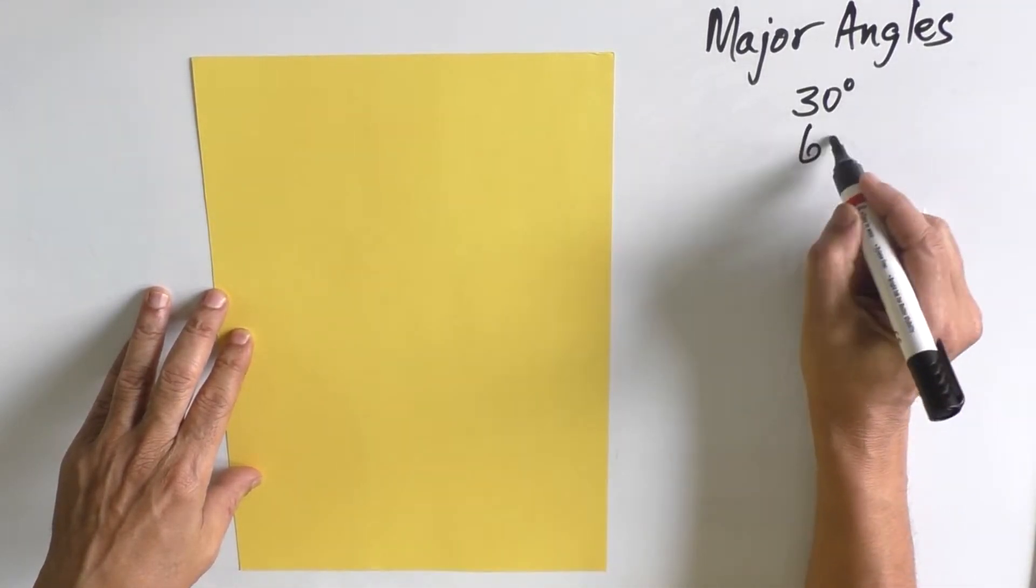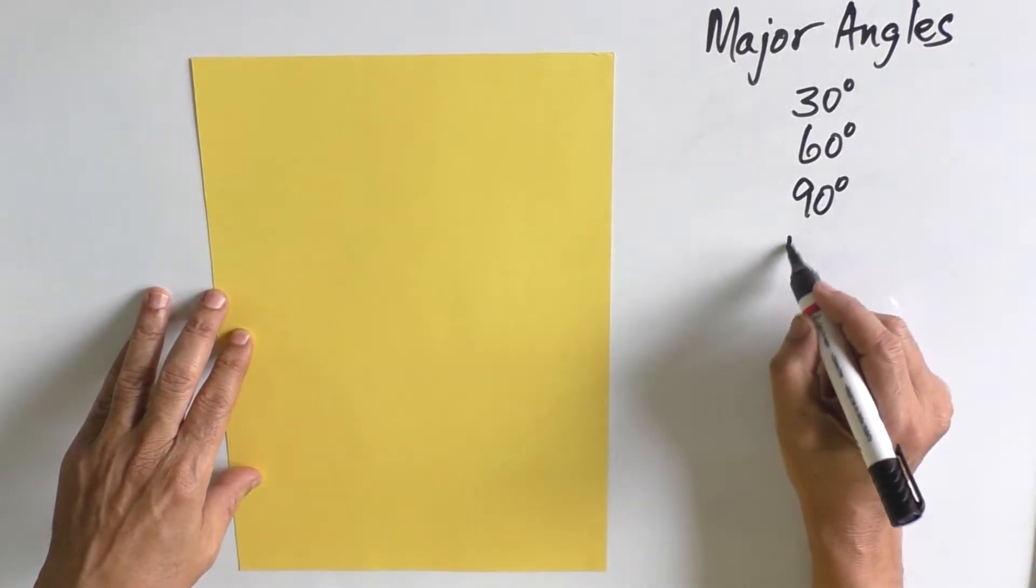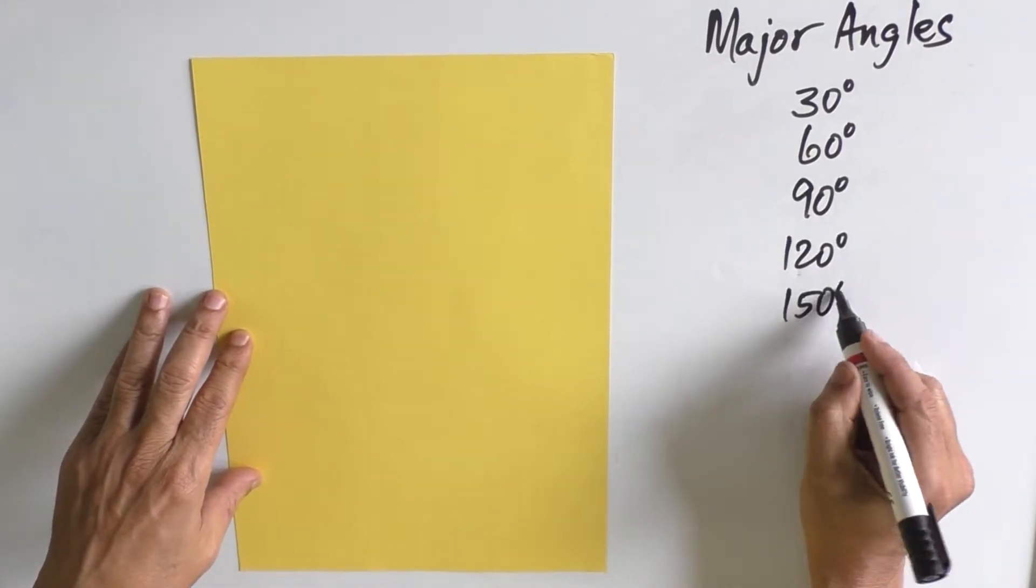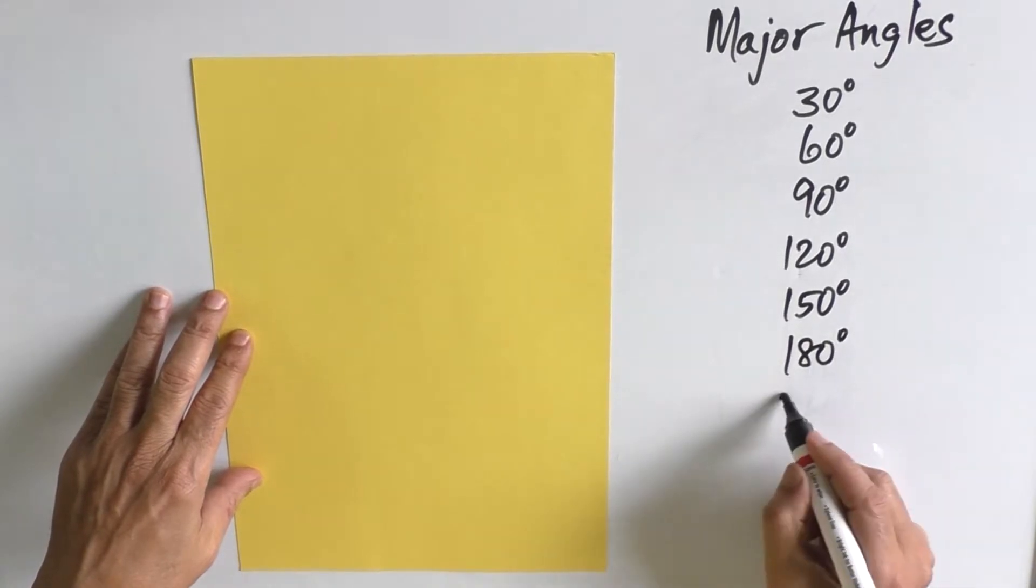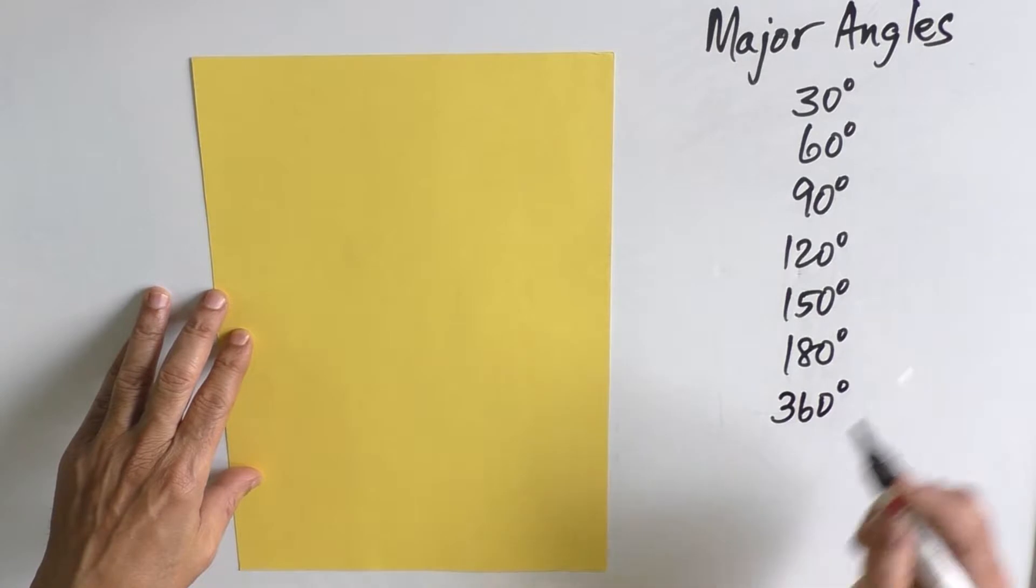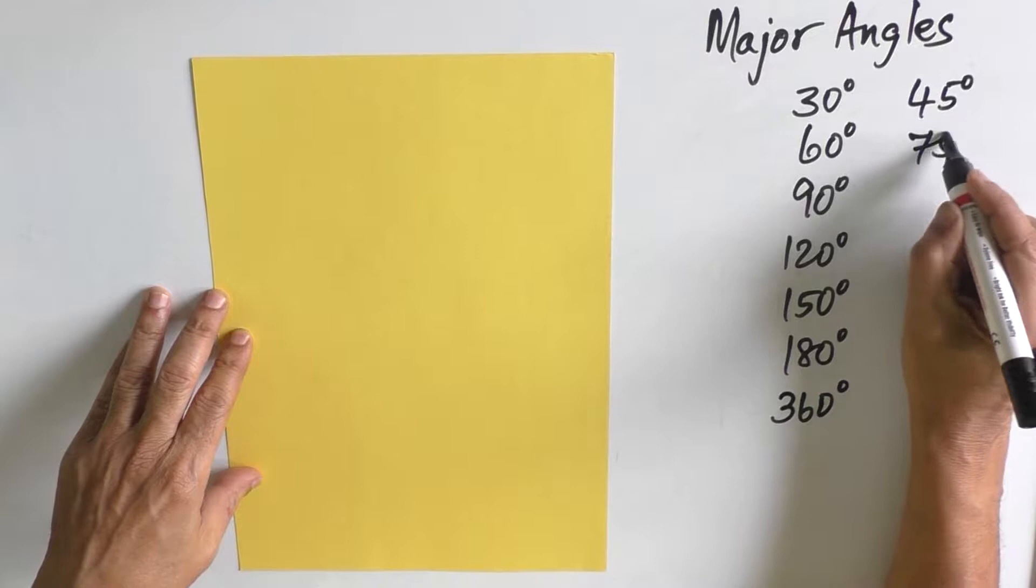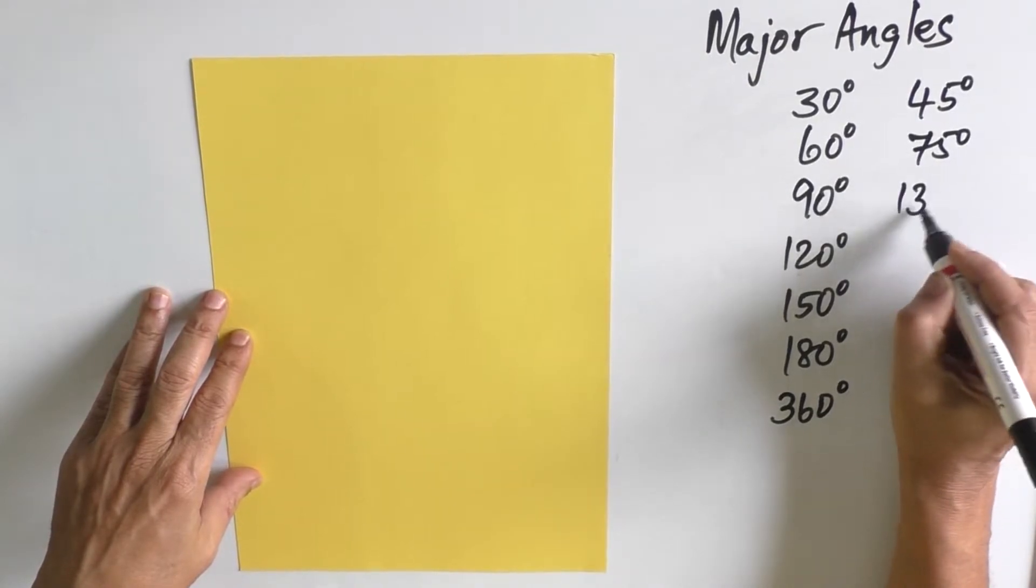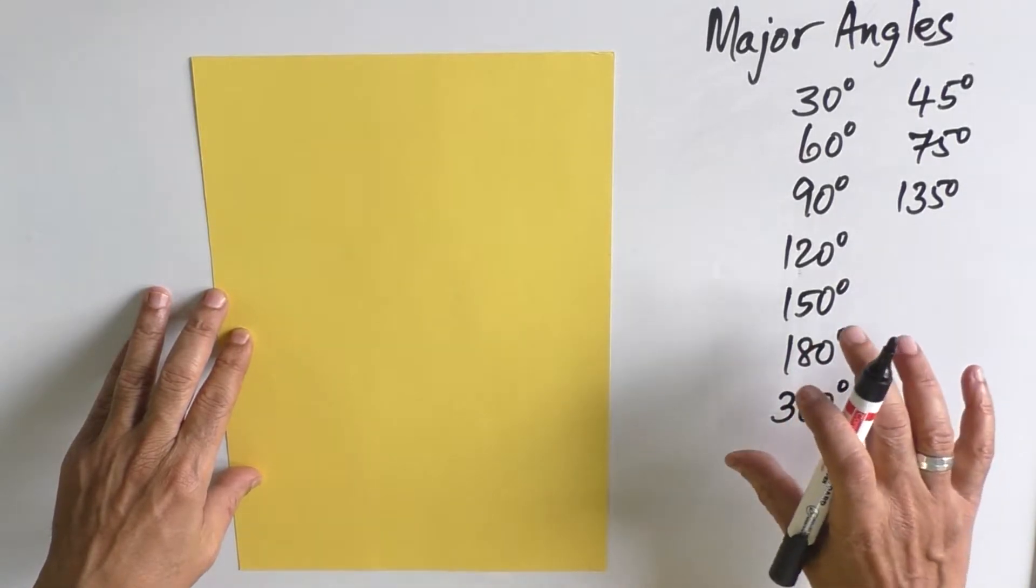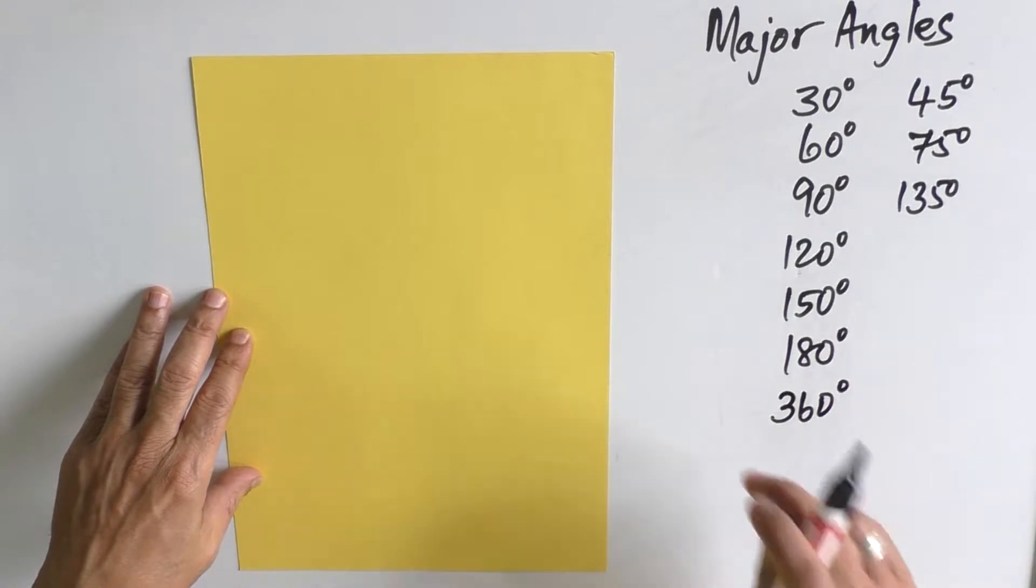60 degrees, 90 degrees, 120 degrees, 150 degrees, 180 degrees, 360 degrees, and angles like 45 degrees, 75 degrees, 135 degrees, etc. If you are able to develop the concept of major angles, then the child will be able